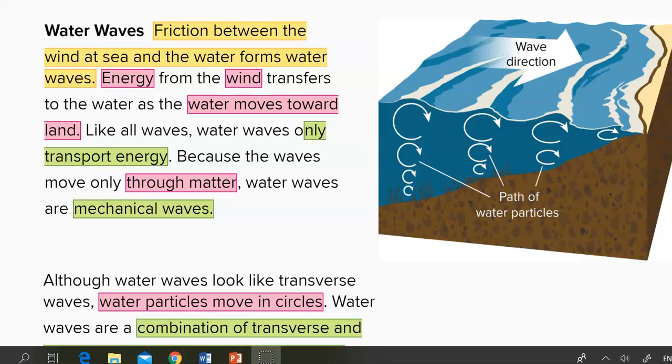Now, water waves. What are water waves? Water waves are friction between the wind at sea and the water that forms water waves, meaning water waves are created by the wind. So the source of energy is wind.